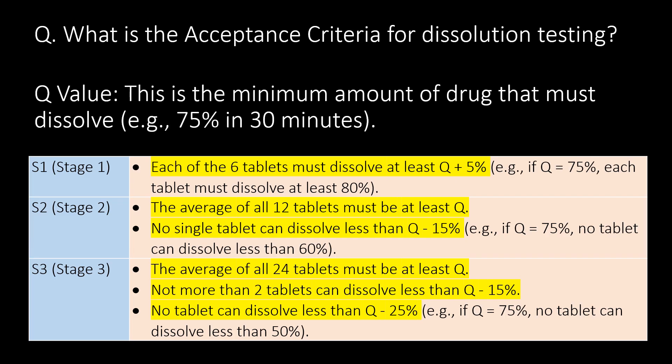What is the acceptance criteria for dissolution testing? For S1 (stage 1), each of the 6 tablets must dissolve at least Q plus 5%, where Q is the minimum amount of drug that must dissolve — for example, 75% in 30 minutes. For S2 (stage 2), the average of all 12 tablets must be at least Q, and no single tablet can dissolve less than Q minus 15%. For S3 (stage 3), the average of all 24 tablets must be at least Q, not more than 2 tablets can dissolve less than Q minus 15%, and no tablet can dissolve less than Q minus 25%.